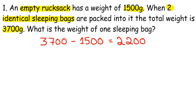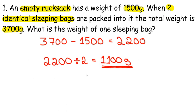So, 2,200 is the weight of two sleeping bags. So, if I want to find the weight of one sleeping bag, I'm going to take my 2,200 grams and divide that by 2 to give me a weight for my one sleeping bag of 1,100 grams. And again, please remember the units. I don't want you to lose any marks on the assessment at all, but least of all for something like units.